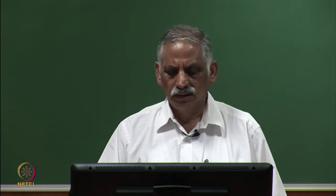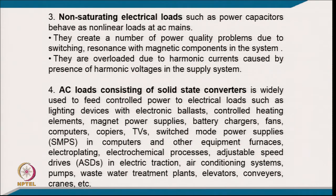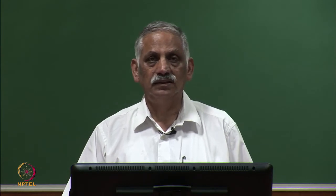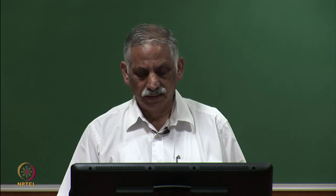The fourth category consists of solid-state converter-based loads, widely used to feed and control power to electrical loads. Examples include electronic ballast-based lighting — fluorescent lamps, CFLs, T5 tubes, and LEDs — all of which use electronic control and draw harmonics. Battery chargers are increasingly common, including for electric three-wheelers. These chargers, often of poor quality, draw harmonics from the supply system.